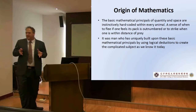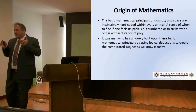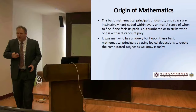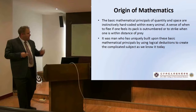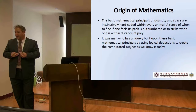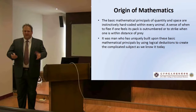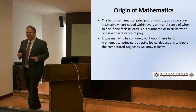The origin of mathematics starts with two basic principles. It starts from our principles of quantity and space — that's really fundamental. What's most important to you? Space and quantity: how much? Are we outnumbered? These are basic concepts we go through every day. It's hardwired within every animal. Every animal has a sense of quantity and space. But it was human beings that uniquely built upon these basic mathematical principles by using logical deductions, creating the complex subject we have today.